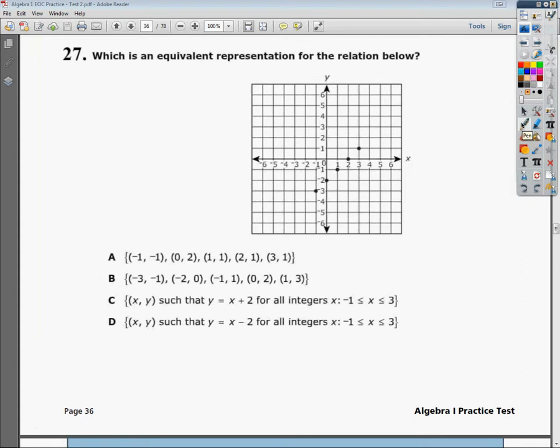That'll knock out A and B if they're not right. A says it should start at negative 1, 1, which means there should be a dot right here. And there isn't, so A is out. If all of them don't match, it's not the right answer.